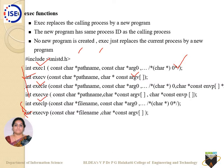One more difference: execle and execve take an additional argument — the environment variable. This environment variable parameter is required for both of these APIs. So these are your six different types of exec APIs and the differences between them.